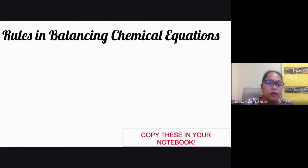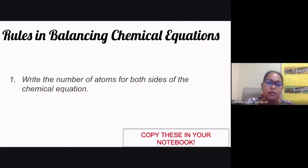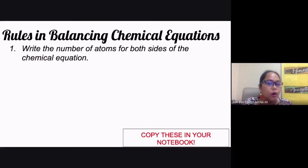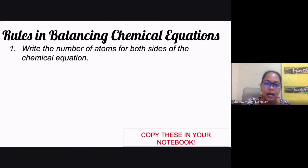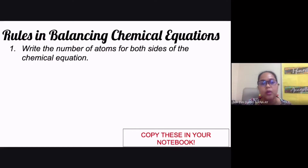These are the rules we follow whenever we try to balance chemical equations. Rule number one: write the number of atoms for both sides of the chemical equation. Also remember some of the rules we have in counting the number of atoms in your chemical equation or in your chemical compound.